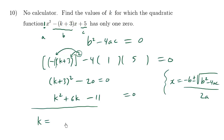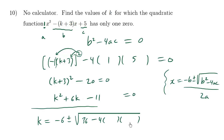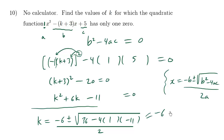So k equals negative b, which is negative 6, plus or minus the square root of b squared — that's 6 squared, which is 36 — minus 4ac where a is 1 and c is negative 11, all over 2a, which is 2 times 1, so 2. We have 36 and a negative times a negative which becomes positive, and working it out we get root 80, all over 2.